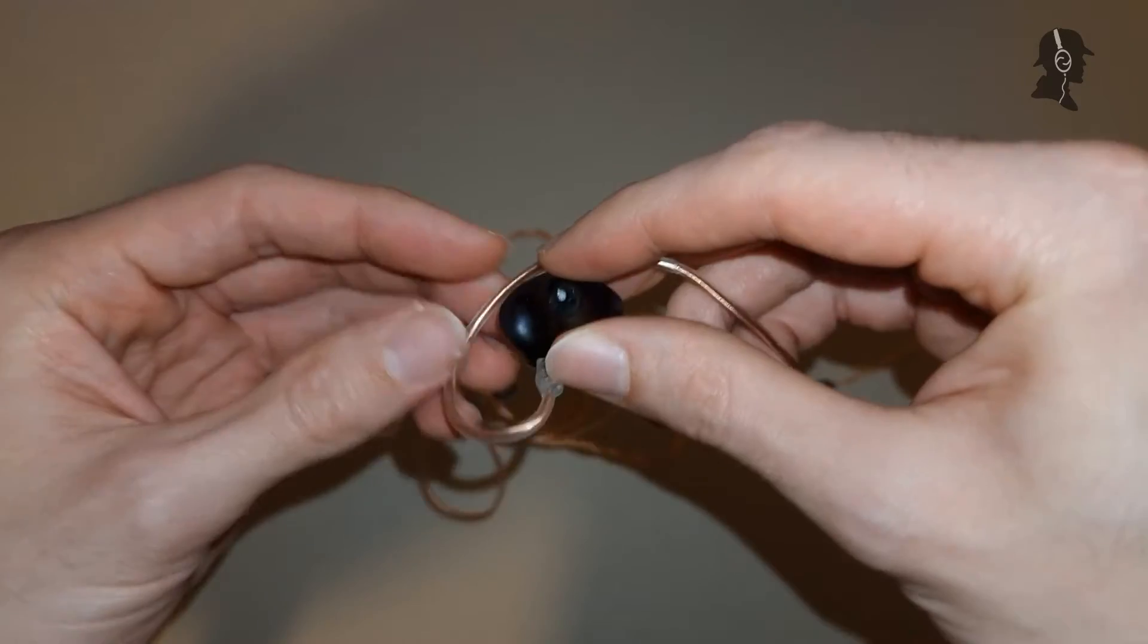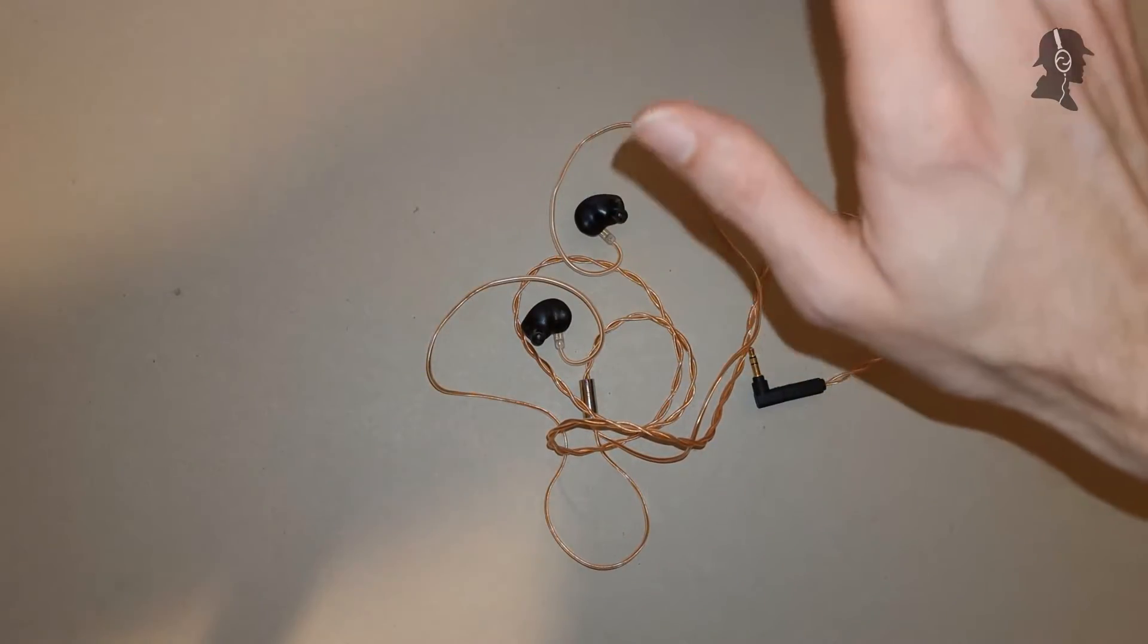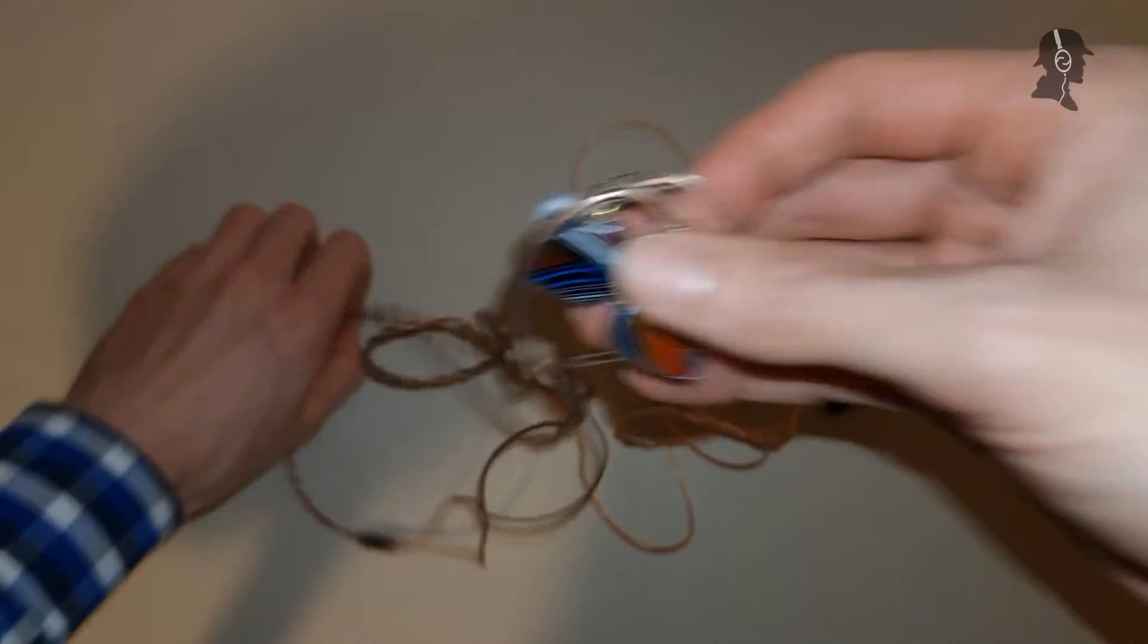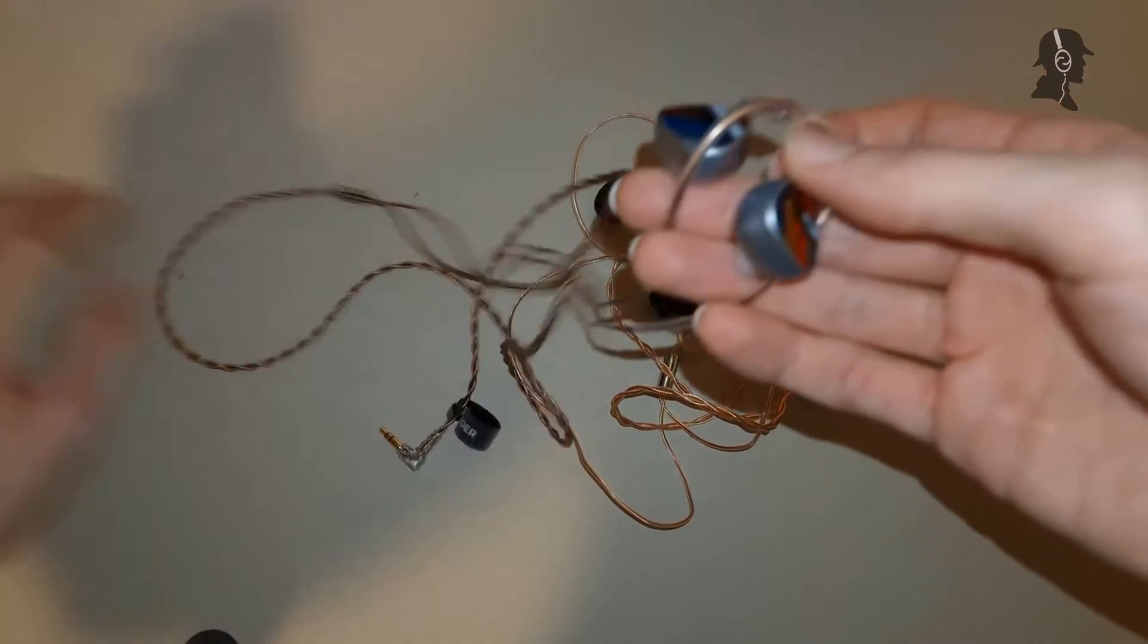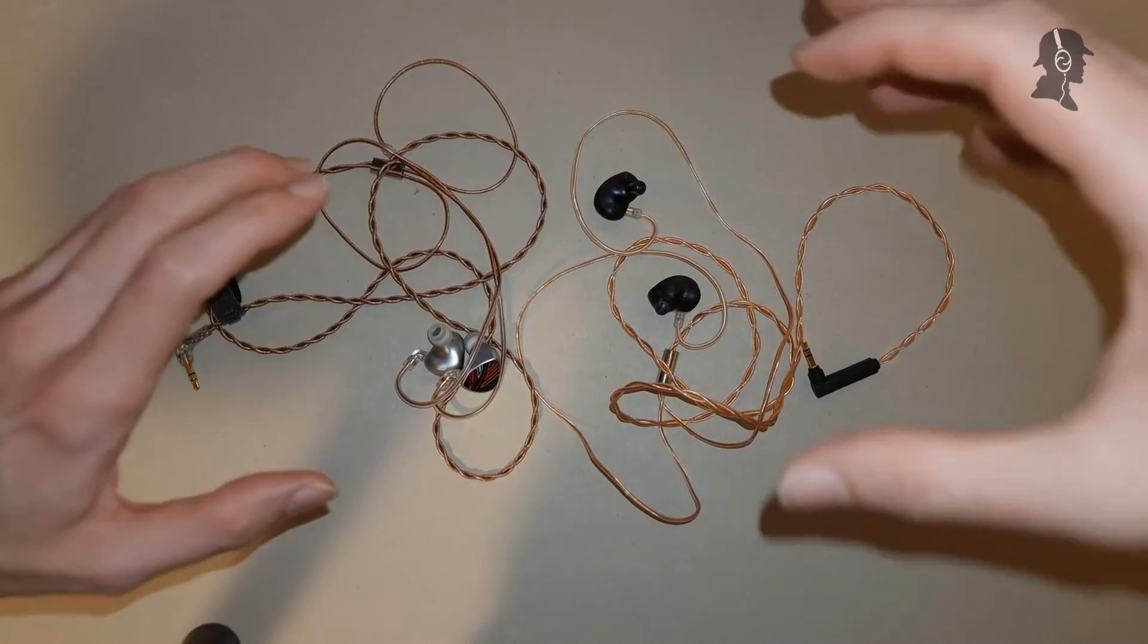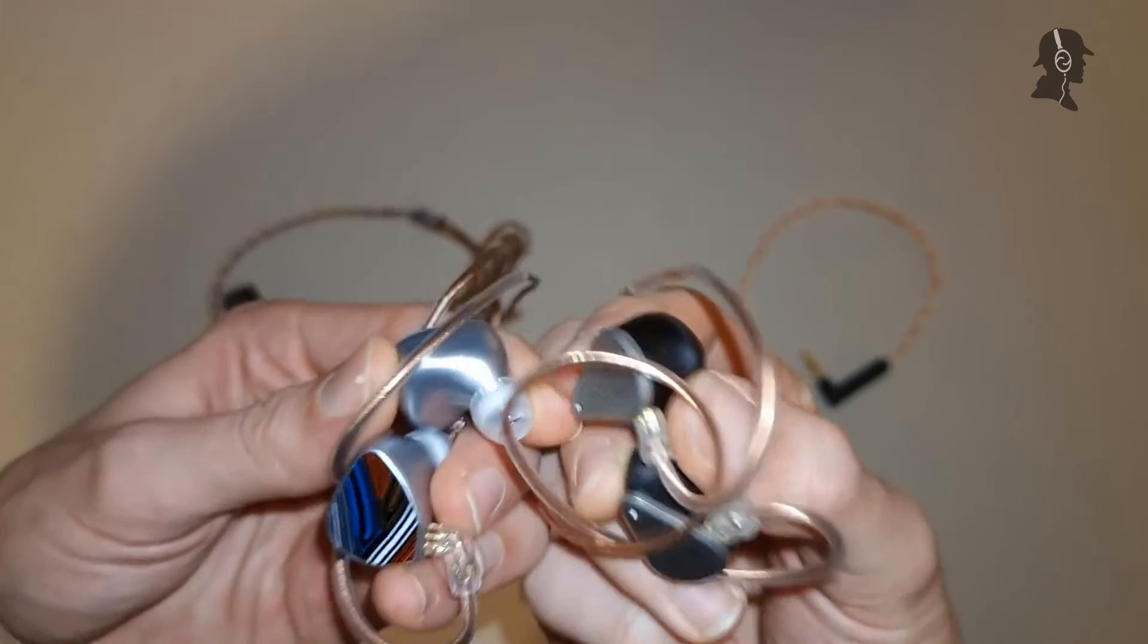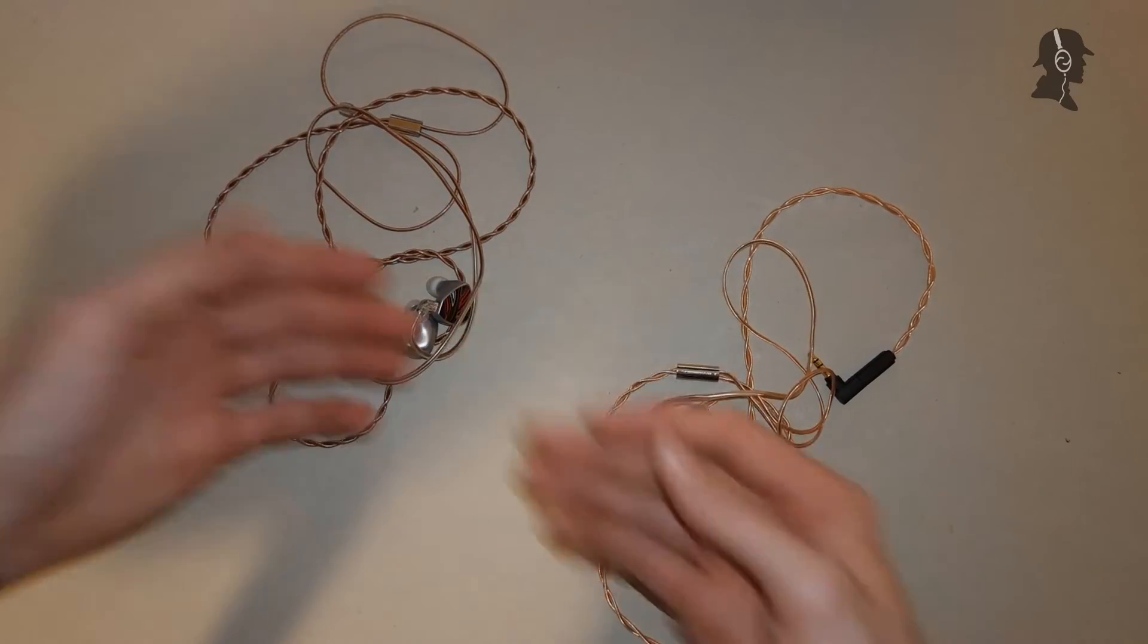But this is not all, because I have a second IEM which has many things in common. The Shuoer EJ07M Kinda Lava, similar price point, but cable also shitty. Strain relief is shitty, it's tangly, it ain't robust. This is just really, I don't understand. You have two great IEMs that basically contest at the tribrid market, being really great, and then the companies fuck it up by just adding shitty cables to it.